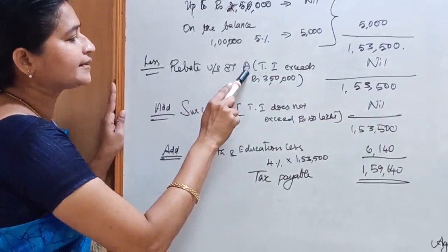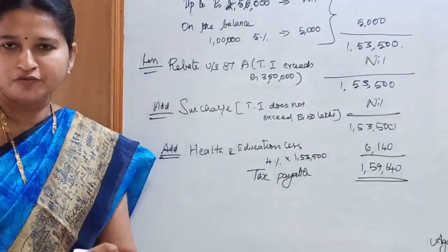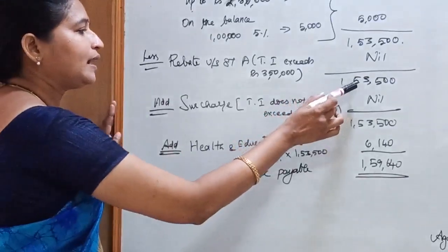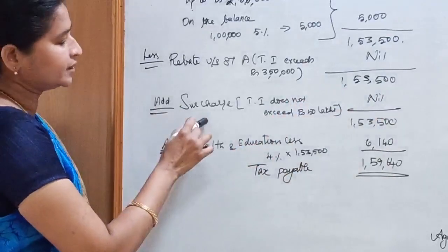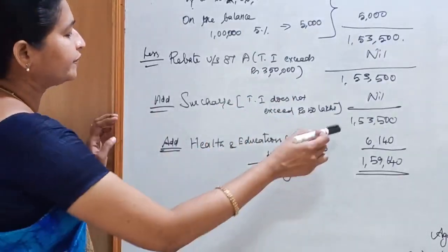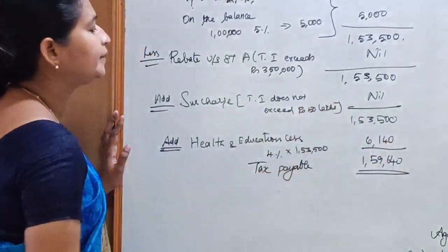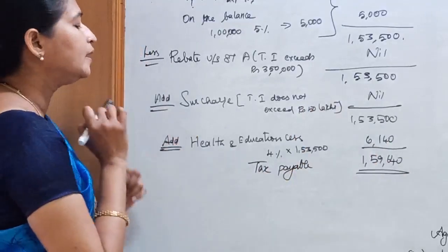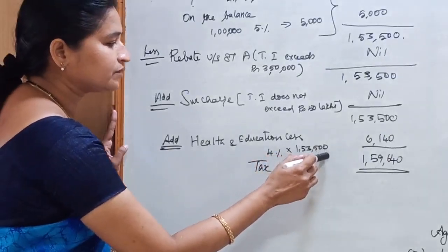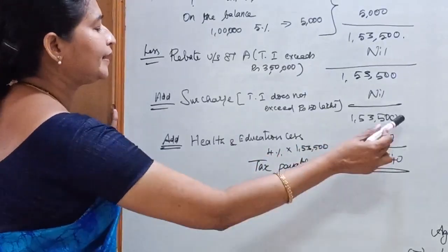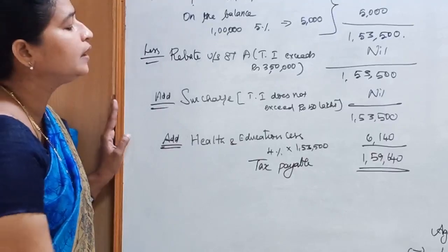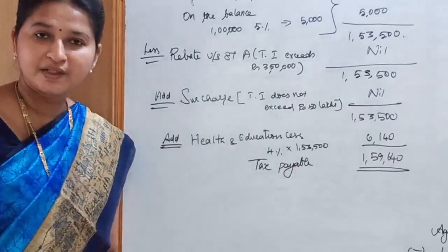Rebate under Section 87A cannot be claimed here because the assessee's total income exceeds Rs. 3,50,000. Balance remains Rs. 1,53,500. Surcharge is also not applicable because the total income does not exceed Rs. 50,00,000. Therefore, the balance tax is Rs. 1,53,500. Adding Health and Education Cess at 4%: 4% on Rs. 1,53,500 = Rs. 6,140. Tax payable by the assessee: Rs. 1,53,500 + Rs. 6,140 = Rs. 1,59,640.